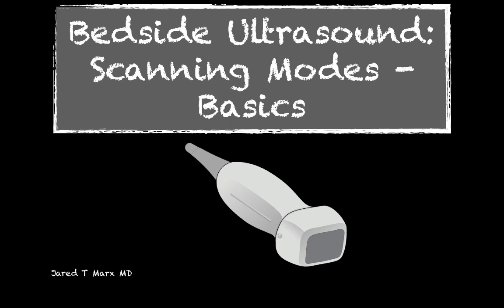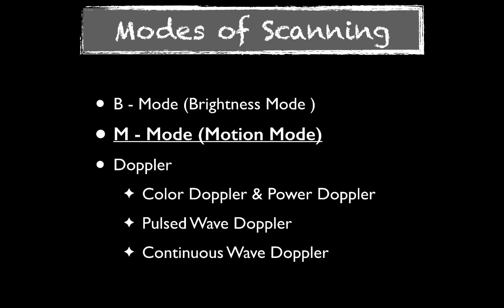Hi, welcome to Bedside Ultrasound. We're going to talk about scanning modes again today and go through those basics. We're going to talk about M-mode, or motion mode ultrasound. This is often used in the emergency department in bedside ultrasound scanning for areas where we want to show motion or obtain measurements of where motion is occurring. Sometimes it's easier to measure in this mode than what our eye can pick up as we visualize it on the ultrasound screen.